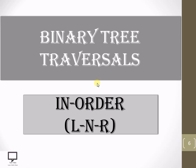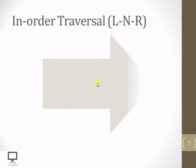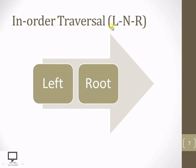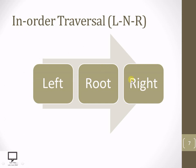In in-order traversal, we follow a sequence of left, root node, and right. L stands for left, N stands for root, and R stands for right. This order is called in-order because the root node is processed in between left and right — after left and before right. That's why the name is in-order traversal.